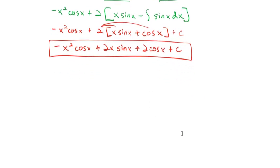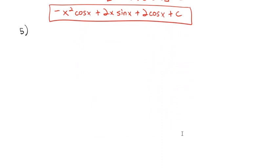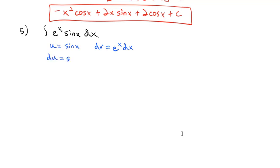Let's take a look at another example that gives us quite an interesting result. Let's take the integral of e to the x times sine x dx. Going through ILATE, the trig comes before the exponentials. So u is equal to sine x, dv is e to the x dx. Our derivative of u — the derivative of sine — is cosine of x. The antiderivative of e to the x is e to the x. And so we end up with u times v: e to the x sine x, minus the integral of v du — the bottom row — e to the x cosine x dx.